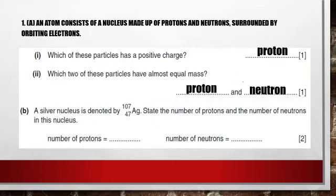Letter B. A silver nucleus is denoted by this symbol. State the number of protons and the number of neutrons in this nucleus. Everybody knows that the subscript in the symbol represents the number of protons. So in this case, the number of protons is equal to 47. The superscript represents the mass number, which equals the number of protons plus the number of neutrons. So if the mass number is 107 and the number of protons is 47, then the number of neutrons is equal to 60.